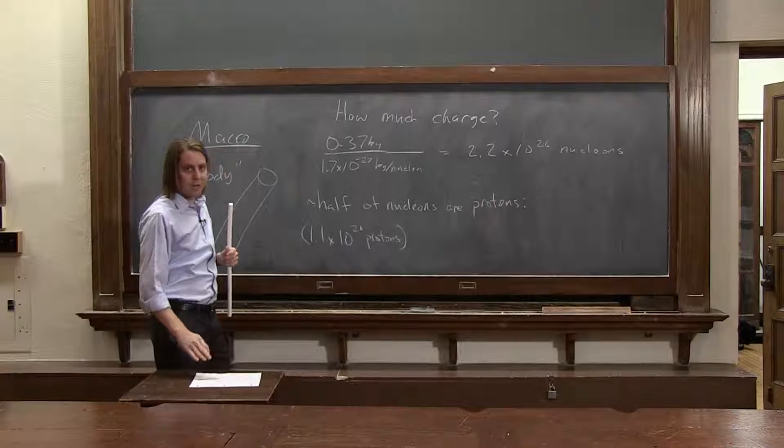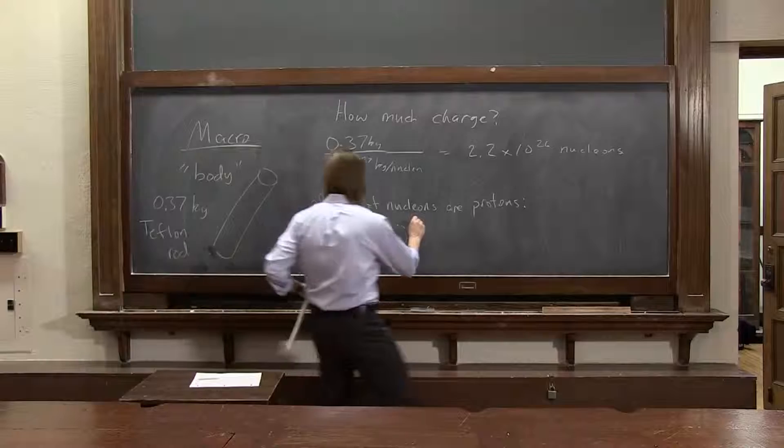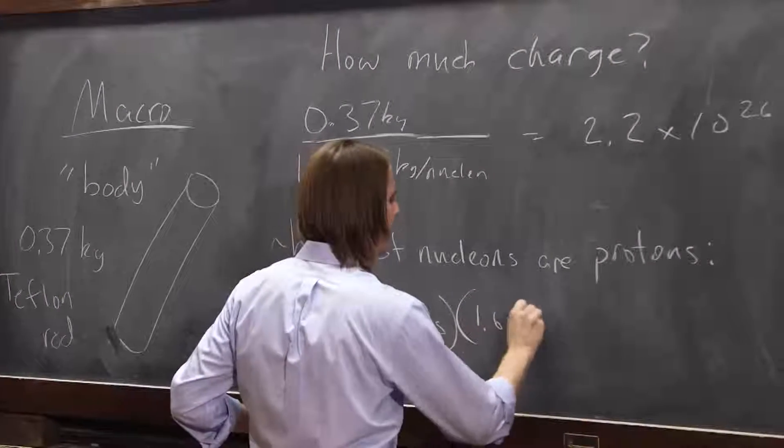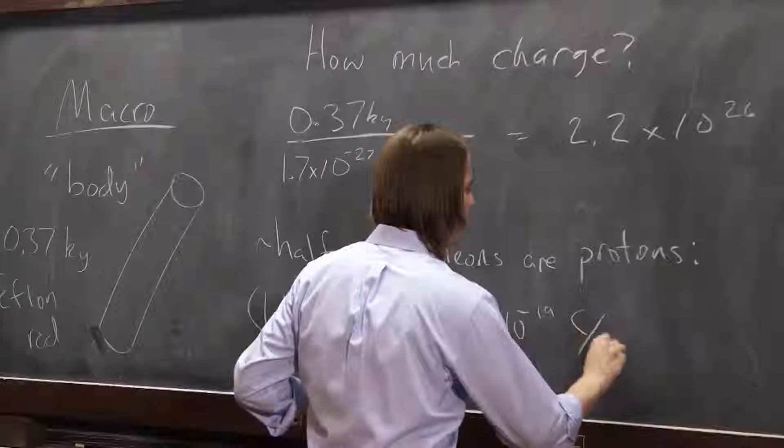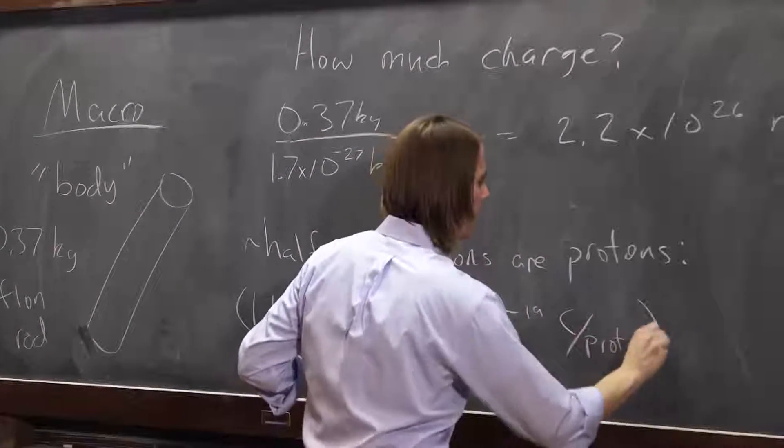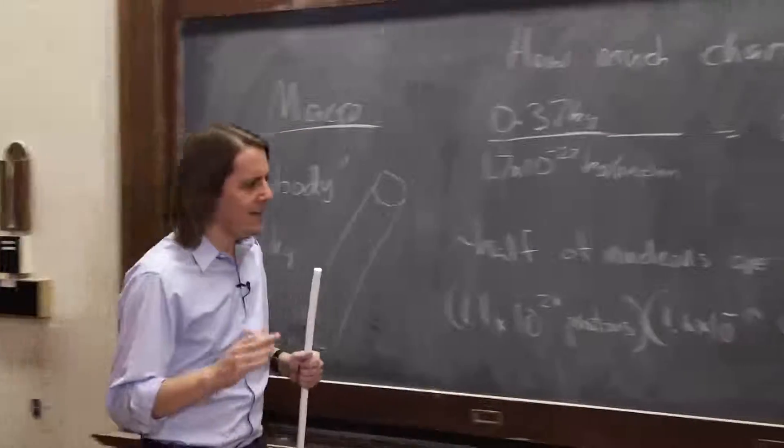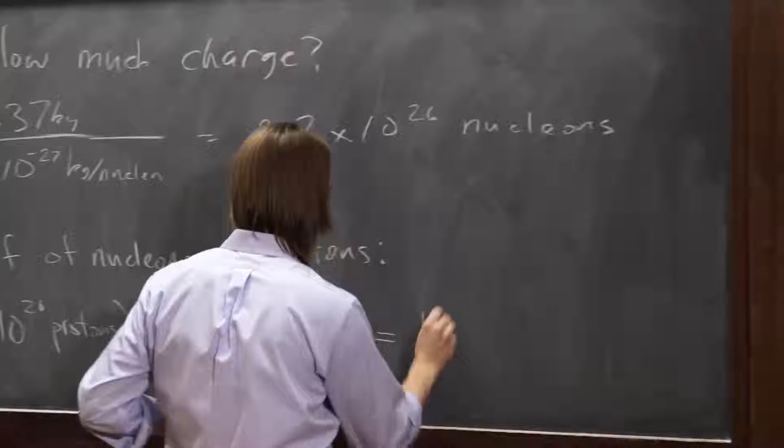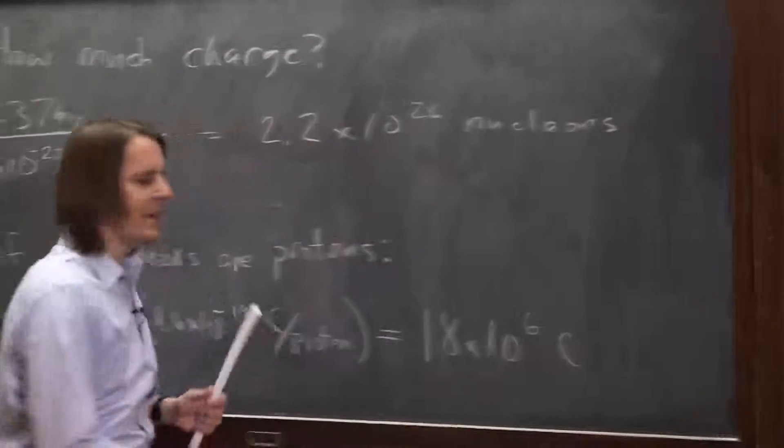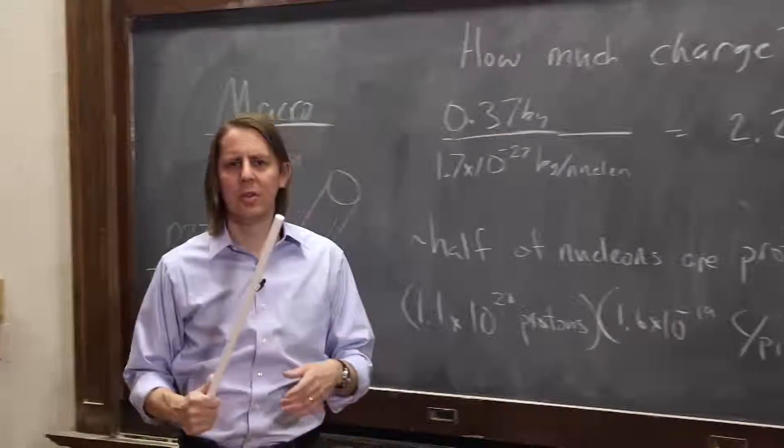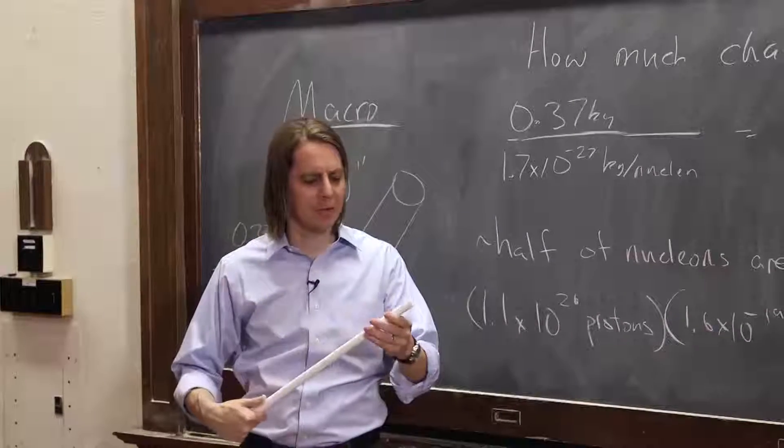And if that's true, now we can figure out the charge, because each one has a charge of 1.6 times 10 to the minus 19 coulombs per proton. So if you multiply those two, you end up with 18 times 10 to the 6 coulombs. That's 18 million coulombs. There are 18 million coulombs of positive charge in this macroscopic Teflon rod.